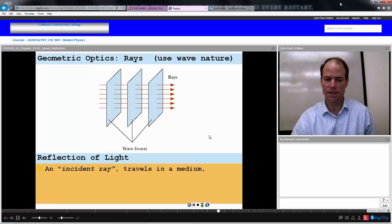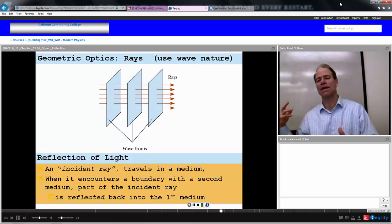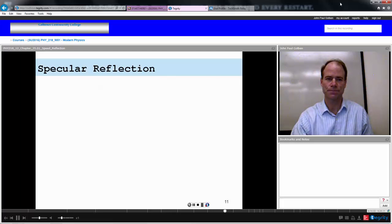If we have reflection of light, the incident ray, which would be the first arrow, will travel in some medium. When it encounters a boundary with a second medium, part of that incident ray will be reflected back into the first medium. This is what we define as the reflection of light. When the first ray hits a boundary, and then there's a second ray, at least part of that is going to be going back into that first medium.